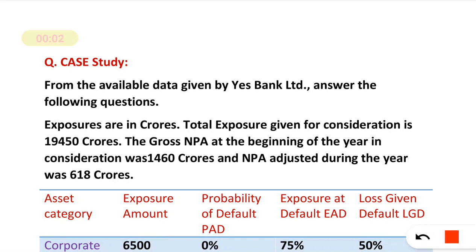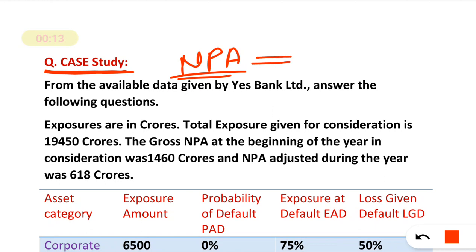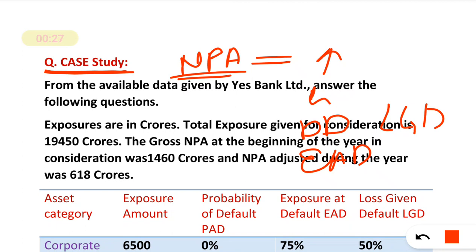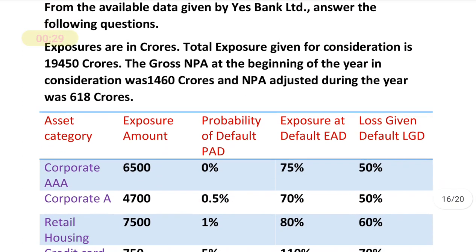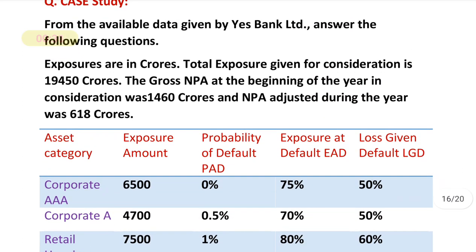Hello friends, here we will discuss a case study based on NPA. We will discuss calculation of incremental NPA, calculation of gross NPA percentage, and using the probability of default, exposure at default, and LGD — that is, loss given default.